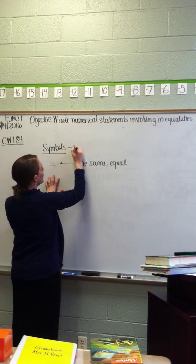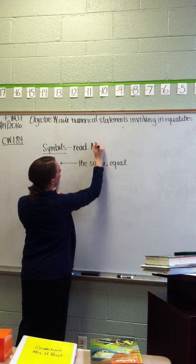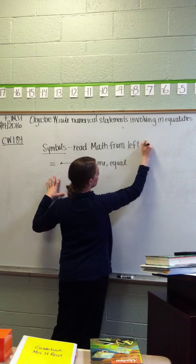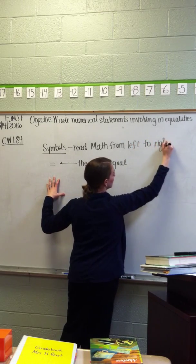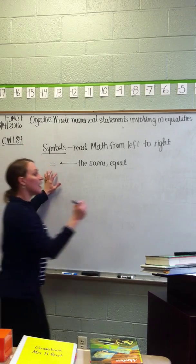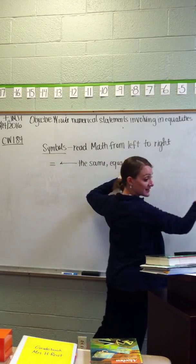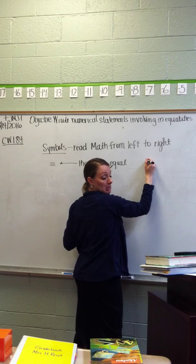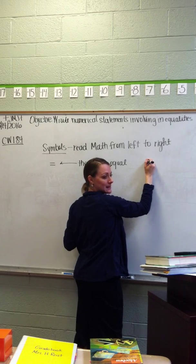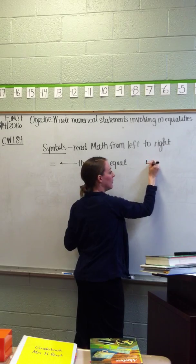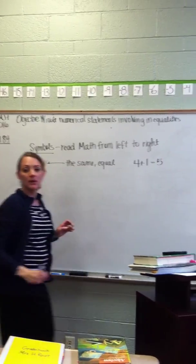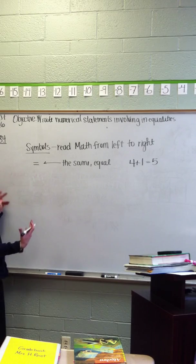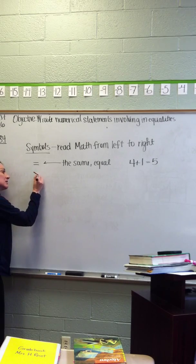Alright. Symbols. Symbols. Alright. The equal sign means that, and we read it from left to right. Somebody give me a statement that is true. We read math the same as we read English, from left to right. Do you agree with that? So what is on the left side equals what's on the right side, right? Somebody give me a statement. Samantha, give me a statement.